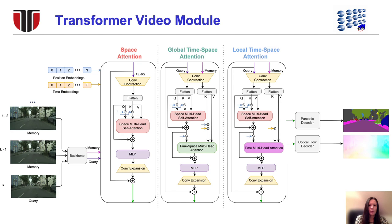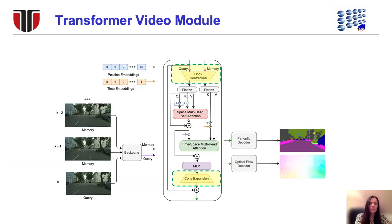We introduce a transformer video module between the backbone and decoders to model temporal and spatial correlations between pixels. We propose three variants of the module with various attention mechanisms. Our video module is inspired by the original transformer architecture with attention and self-attention mechanisms that operate on the spatial or temporal dimension. In order to reduce the compute of the attention blocks, we wrap the transformer between two point-wise convolutions.